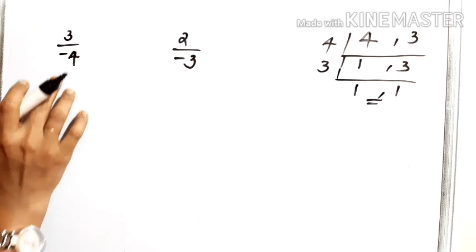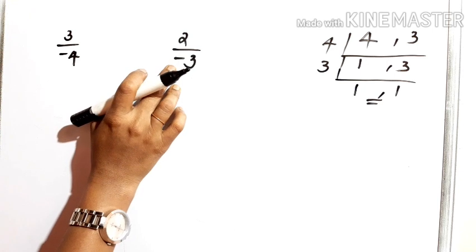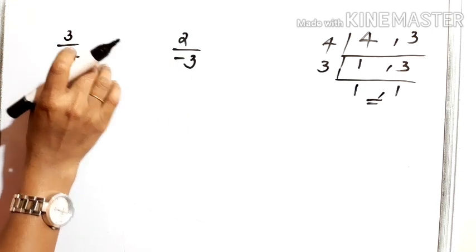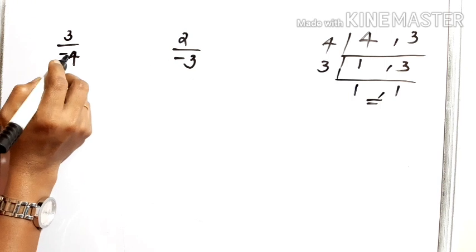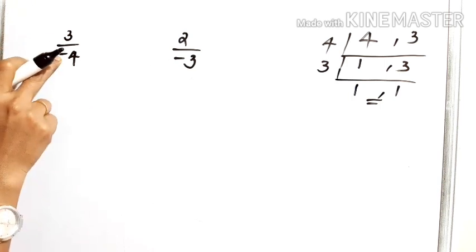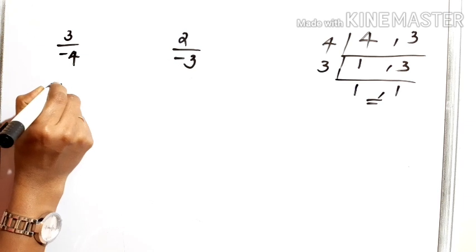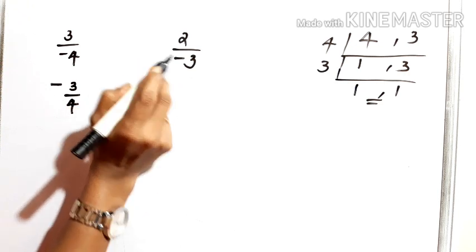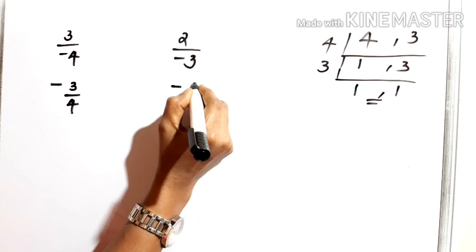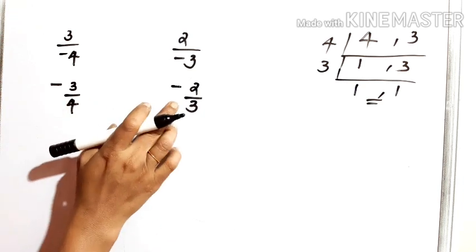Here we can see negative denominators or negative Q's. In this question, first we should convert negative Q's or negative denominators into positive denominators. To remove the negative from the denominator, listen children — positive divided by negative equals negative. So 3 by negative 4 becomes minus 3 by 4, and positive divided by negative gives negative, so 2 by negative 3 becomes minus 2 by 3. Now we can see positive denominators. Is it clear, children?